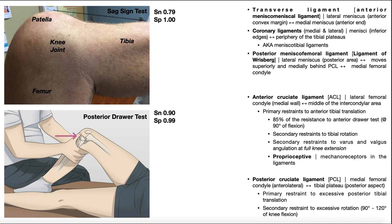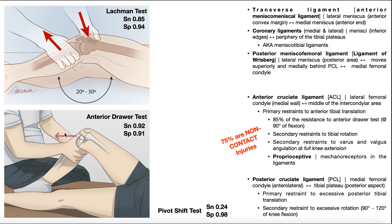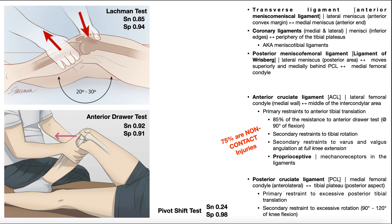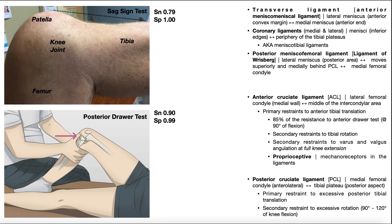Now let's take a look at some special tests we can use to rule up or rule down a PCL tear. We have the sag sign test, also called the posterior sag sign, and then we have the posterior drawer test. We're going to start with the posterior drawer test because it's very similar to the anterior drawer test from the previous ACL video — the only difference is the direction of force. Anterior drawer is for the ACL; posterior drawer is for the PCL.